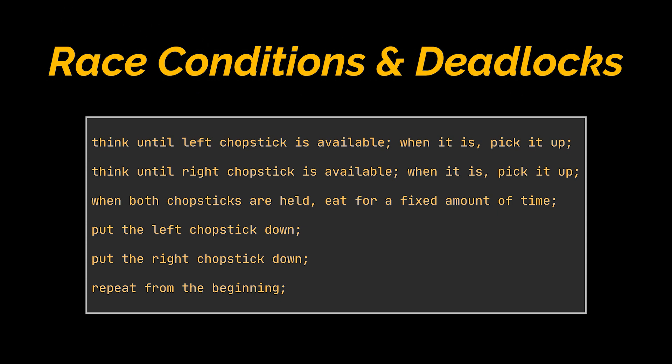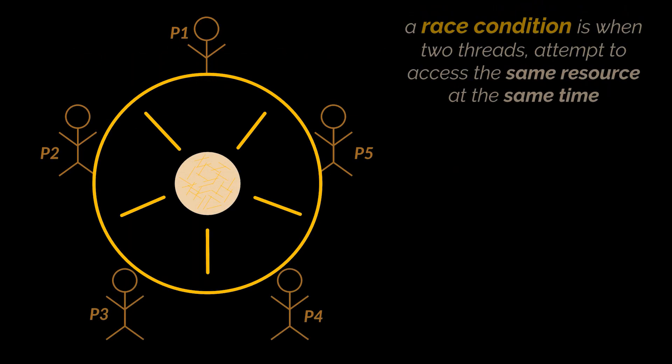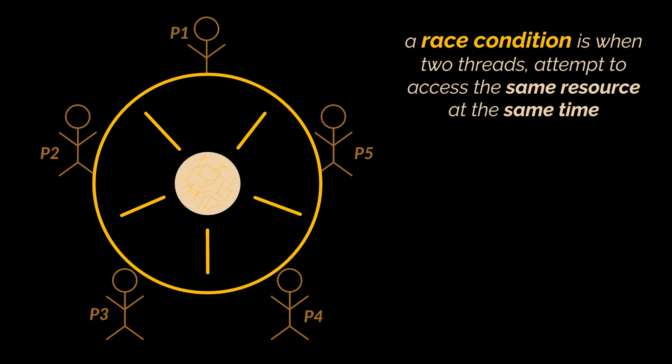This solution is exactly the reason why this problem was created, and it's to illustrate the challenges of avoiding race conditions and deadlocks. A race condition is when two threads attempt to access the same resource at the same time. In this example, chopsticks are the resources. To visualize this, suppose in the first round the second and fourth philosophers got hold of the chopsticks and are eating.